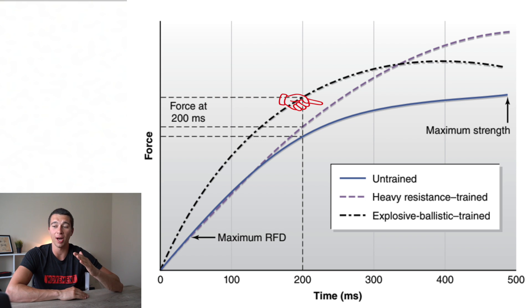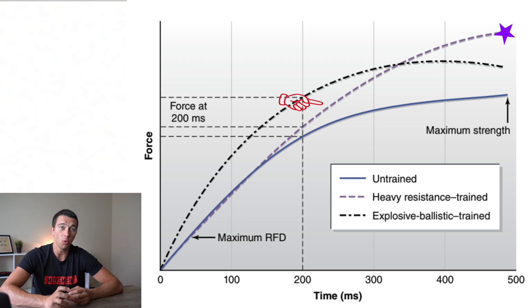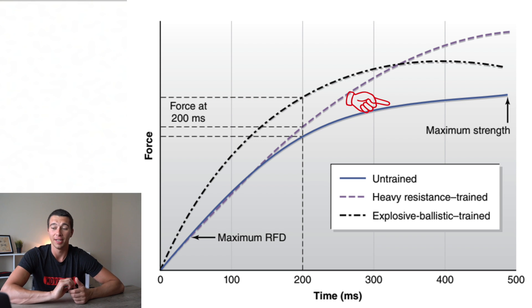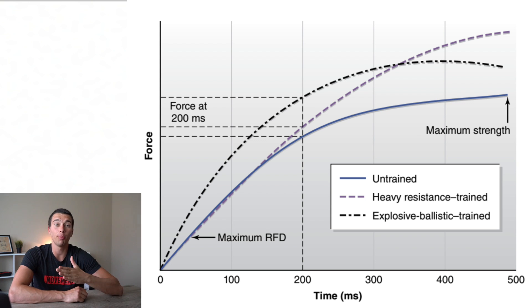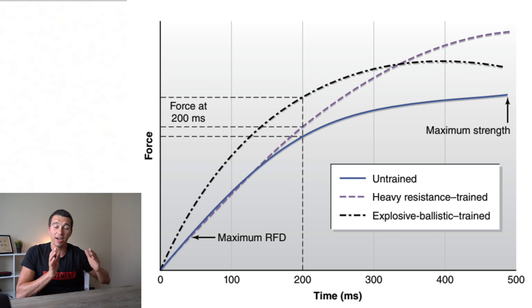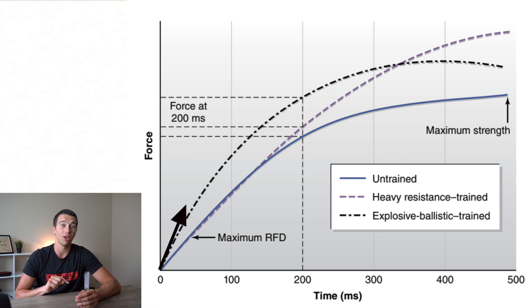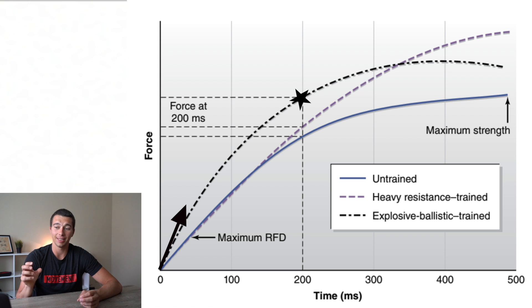By contrast, that purple dashed line — less steeply sloped but with a higher point overall — that is going to be our powerlifter. They're able to produce more maximal force but have less rate of force development. The bottom line is just someone who's untrained: low slope, low potential, low max strength. The steeper the front part of the line, the faster that athlete can produce force. The black dotted line is steeply sloped — that athlete is producing a lot of force really quickly within the first 0.1 to 0.2 seconds.